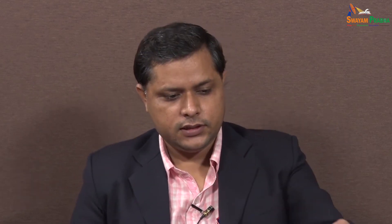I will recap module 3. In module 3 we discussed the measurement of surface tension. In the first lecture we discussed the surface tension of liquid — different methods like detachment-based methods such as the ring method, plate method, then analysis of drop shape, and also a few dynamic methods like flow methods.